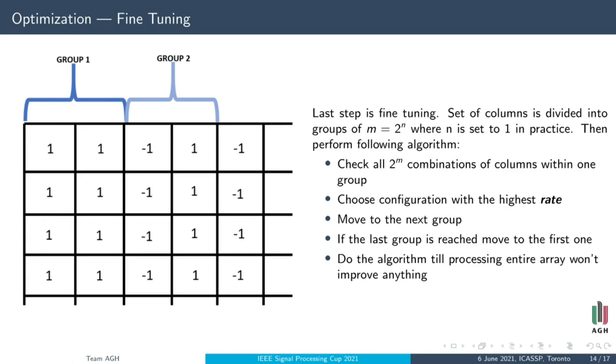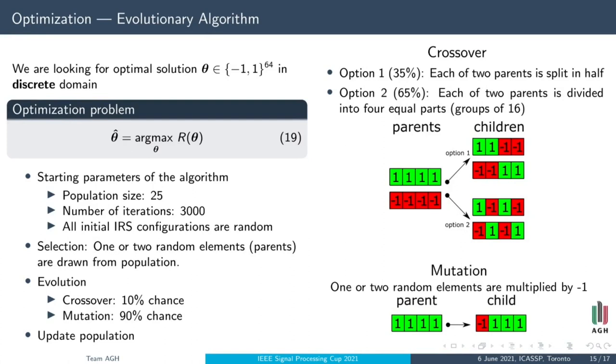The other method we designed is an evolutionary algorithm. In the algorithm, we are looking for solutions that are vectors of 64 elements that contain 1 or negative 1. Those elements represent the state of a meta-atom. At the beginning, a set of random solutions called population is created. Size of the population is 25 and stays constant throughout the algorithm.